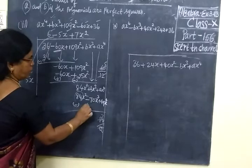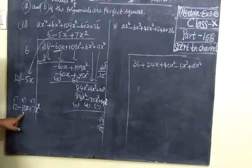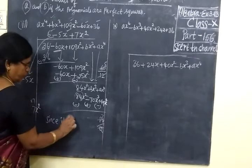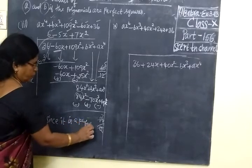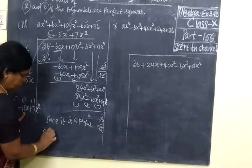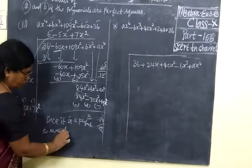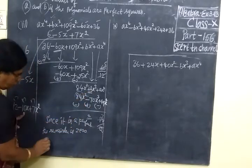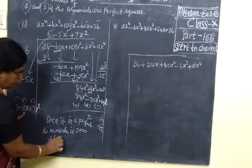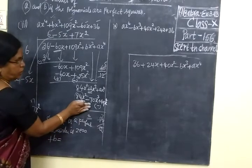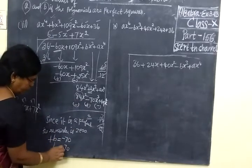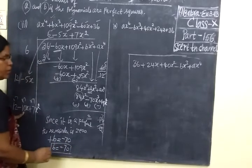Now change the sign: minus, plus, minus. Here 10 into 7 is 40 — minus 40. Now since it is a perfect square, since it is a perfect square, the remainder should be 0. So the remainder is 0. Now the sign — plus b equal to, here we are writing, minus 70. So b equal to minus 70. So the answer is b equal to minus 70.